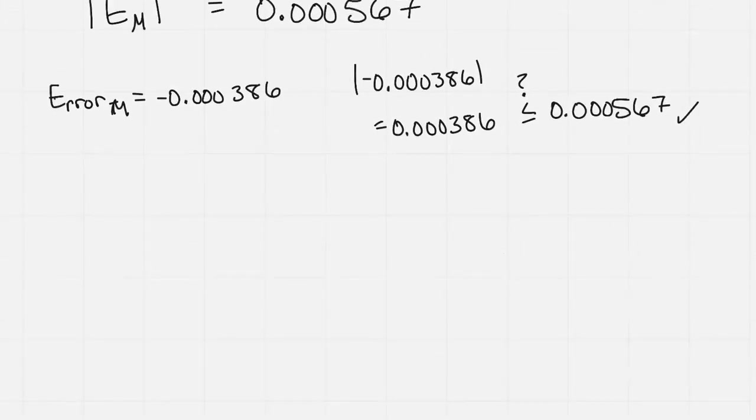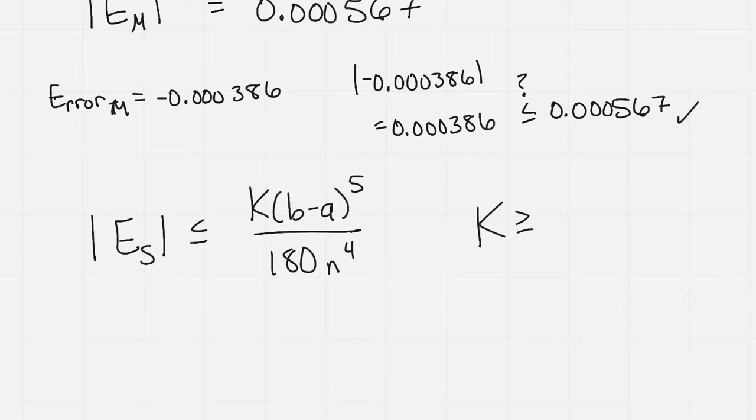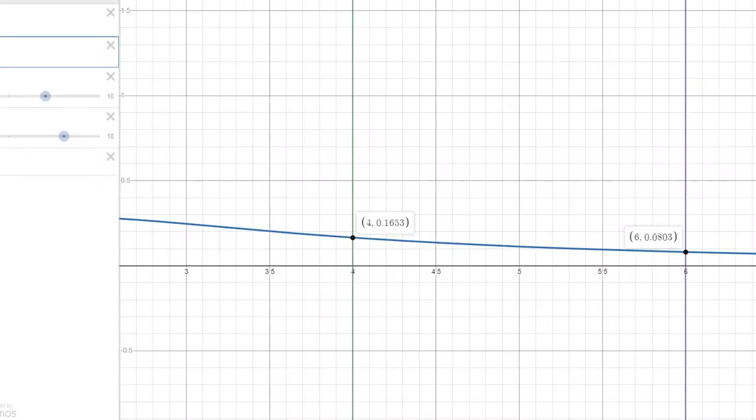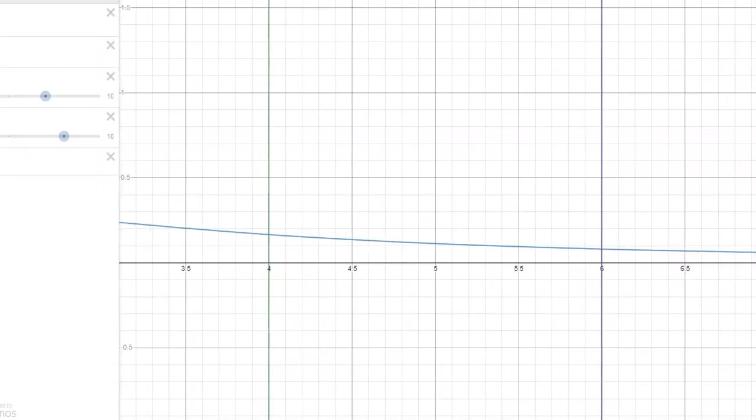Now Simpson's rule is a little bit different. So the error for Simpson's rule, that error bound, is k times b minus a to the fifth power all over 180 times n to the fourth. But now k has to be greater than or equal to the absolute value of the fourth derivative of the function f. And again, I have a video displayed where it shows calculating the fourth derivative.